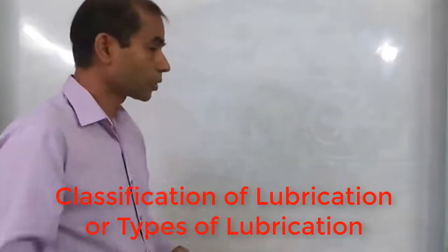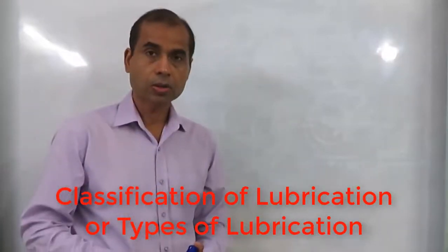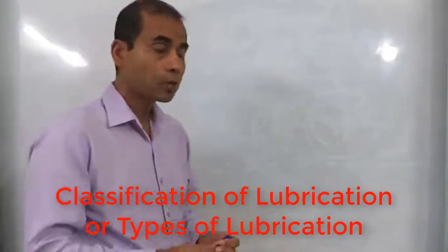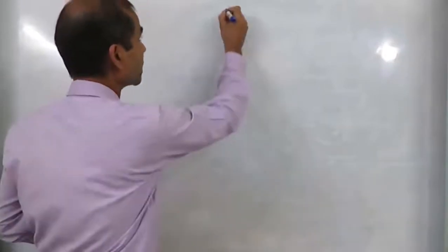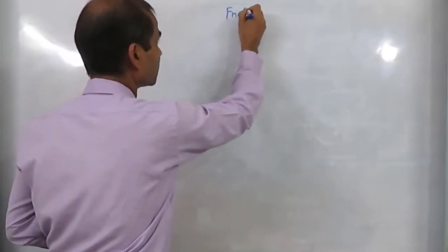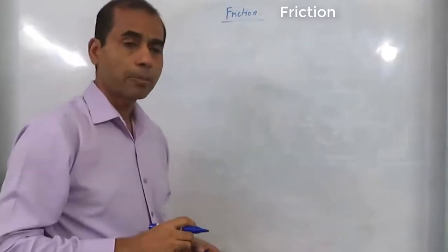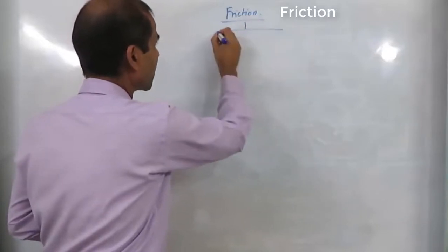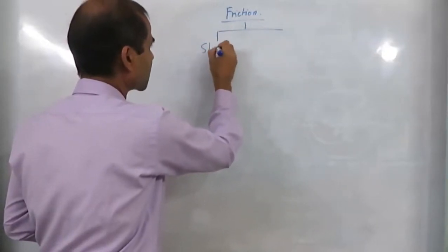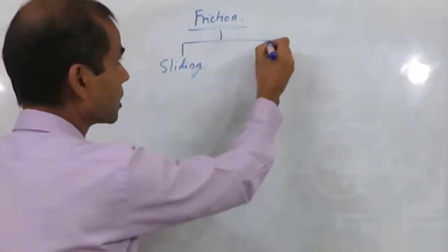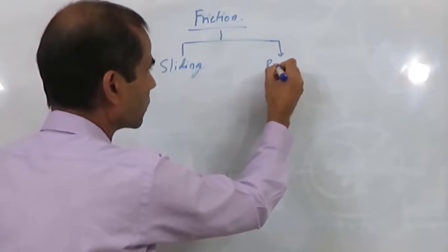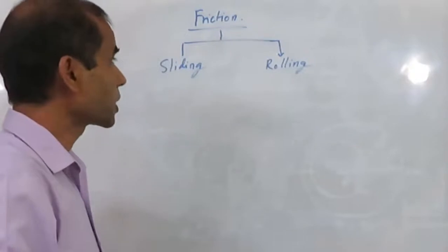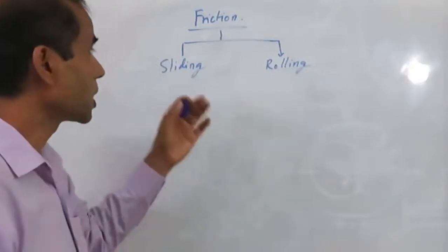Welcome to this video. In this video I will teach you about classification of lubrication or types of lubrication. In another video we have learned about friction, and for macroscopic conditions we have learned that friction can be of two types. One is called sliding friction and another is called rolling friction. These are the two major types of friction that we encounter in any engineering system.